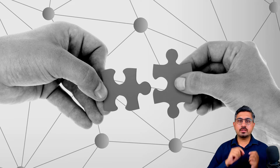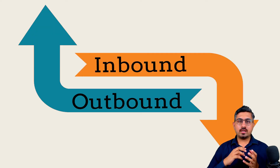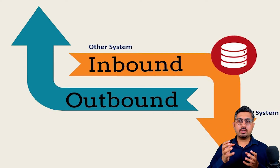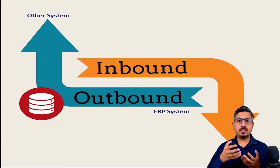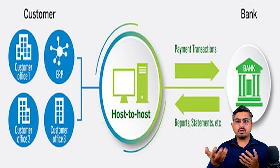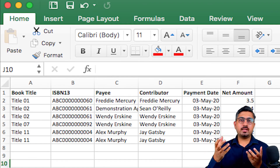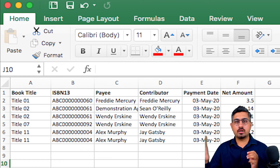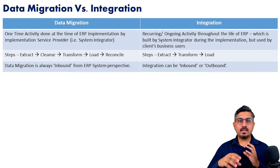The job of ERP implementer companies, or system integrators, is to identify all such requirements and build integrations between third-party systems and the ERP system. Integrations can be inbound as well as outbound. Inbound means data coming into the ERP system from a third-party system like the point-of-sale system. Outbound means data extracted from the ERP and transferred to another system — for example, a payment file integration with the bank system, where a payment file is generated in the ERP and transferred to the bank server to process vendor payments. So integration can be either inbound or outbound.